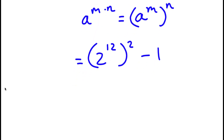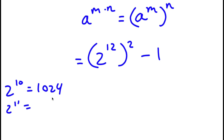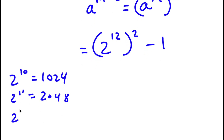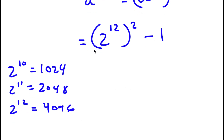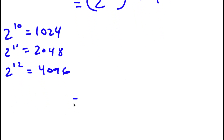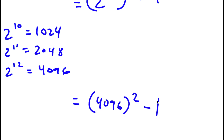We know that 2 to the power of 10 is equal to 1,024. So 2 to the 11 is double that, which is 2,048. And 2 to the power of 12 is double 2,048, which is 4,096. So now I have 4,096 squared minus 1.